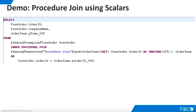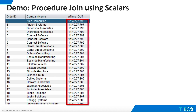Now let's look at use cases that do use procedure join syntax. Here is the SQL for a view that joins order data with a time value returned from our scalar procedure. Imagine that the time returned by the procedure is the exact time the order was placed. To specify a procedure join, we add the word 'procedure' before the word 'join'. Instead of hard coding the procedure's input parameter, we specify a column from the orders view. The input parameter will now change for each row in the orders view. When we execute the view, we see that the stored procedure is indeed executing multiple times because our time value changes throughout the result set.